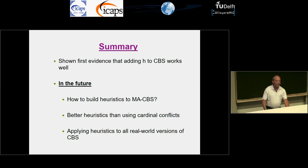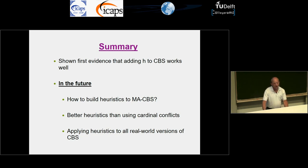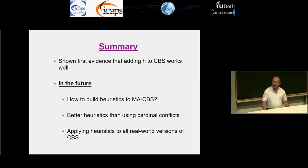To summarize, we have shown first evidence that adding H to CBS works well. In the future, we want to build heuristics for meta-agent CBS, explore better heuristics beyond cardinal conflicts — there is a lot of literature in the planning community on sophisticated heuristics that may be applicable to CBS — and extend our heuristics to real-world versions of CBS with additional constraints and assumptions. Thank you very much.